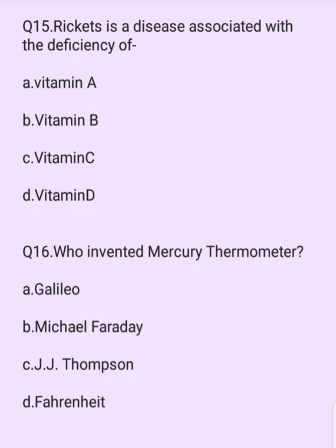Rickets is a disease associated with deficiency of which vitamin? Options are: vitamin A, vitamin B, vitamin C, vitamin D. The answer is option D: vitamin D.